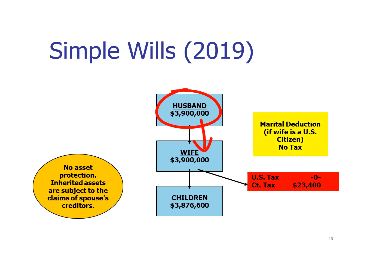When the husband dies and his will says the wife gets the full $3.9 million, if the wife is a U.S. citizen there will be no estate tax on that transfer — no federal estate tax and no Connecticut estate tax. Keep in mind that the federal estate tax exemption in 2019 is more than eleven million dollars, so when the wife dies, because her estate is less than the federal exemption, there will be no federal estate tax.